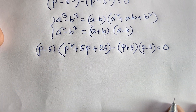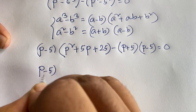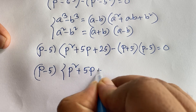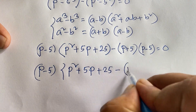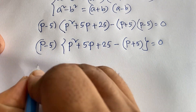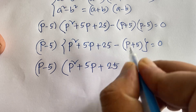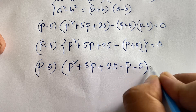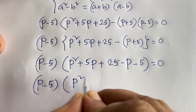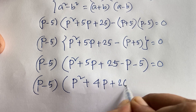Now, here is P minus 5 — this P minus 5 is common. So P minus 5, dividing through, gives P squared plus 5P plus 25 minus P plus 5 equal to 0. This becomes P minus 5 times P squared plus 5P plus 25, and then 5P minus P is 4P, and 25 minus 5 is plus 20, equal to 0.